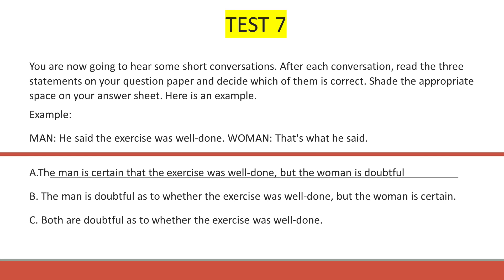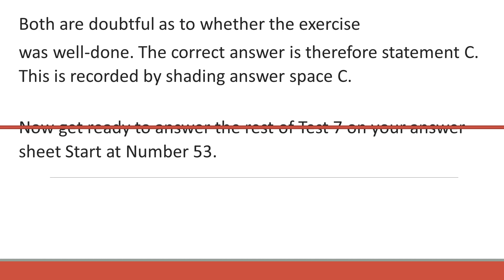Test 7. You are now going to hear some short conversations. After each conversation, read the three statements on your question paper and decide which of them is correct. Share the appropriate space on your answer sheet. Here is an example. You said the exercise was well done? That's what he said. Both are doubtful as to whether the exercise was well done. The correct answer is therefore statement C. This is recorded by shading answer space C. Now get ready to answer the rest of test 7 on your answer sheet. Start at number 53.